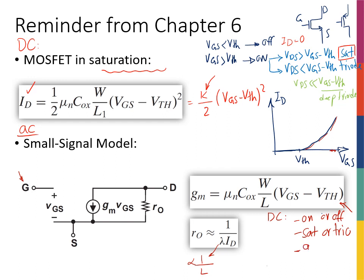Therefore, I can find my gm and r0. Once I have this, I can actually start drawing my small signal circuit and move on to the AC analysis world.